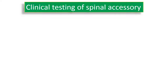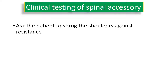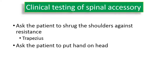Clinical testing of the spinal accessory nerve can be done by the following tests. First, ask the patient to shrug the shoulders against resistance — this tests the integrity of the spinal root of the cranial nerve and the trapezius muscle. Second, ask the patient to put the hand on the head, which tests trapezius function with shoulder abduction beyond 90 degrees.